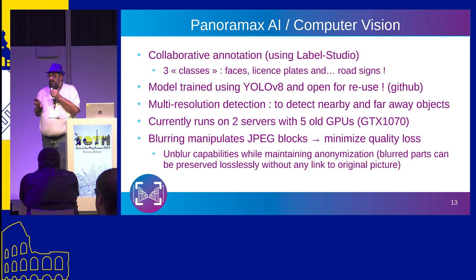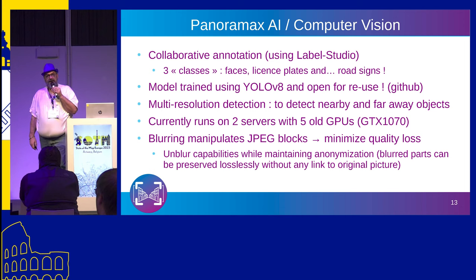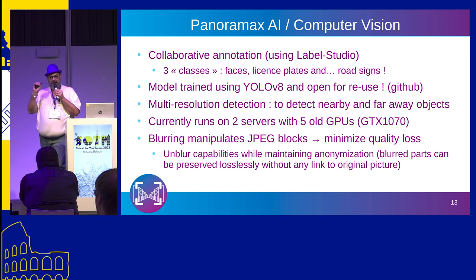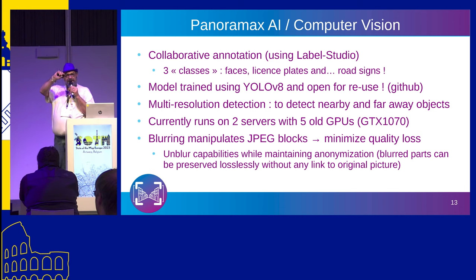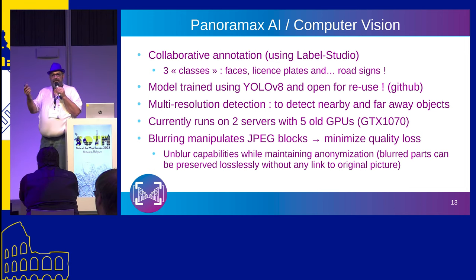A technical detail: when we blur a portion of a JPEG file, we don't change the pixels around it. JPEG files are organized in 8×8 pixel blocks — we switch the blocks, but blocks unaffected by blurring are kept exactly as you sent them. We also have the capability to unblur — we can keep the blurred part with no link to the original picture. This is important when we have a false positive and want to remove blurring from a part that didn't need it. We implemented it even if we don't use it often.